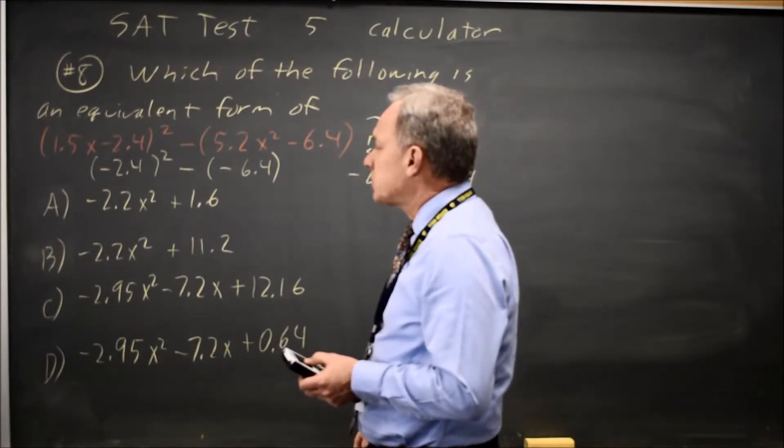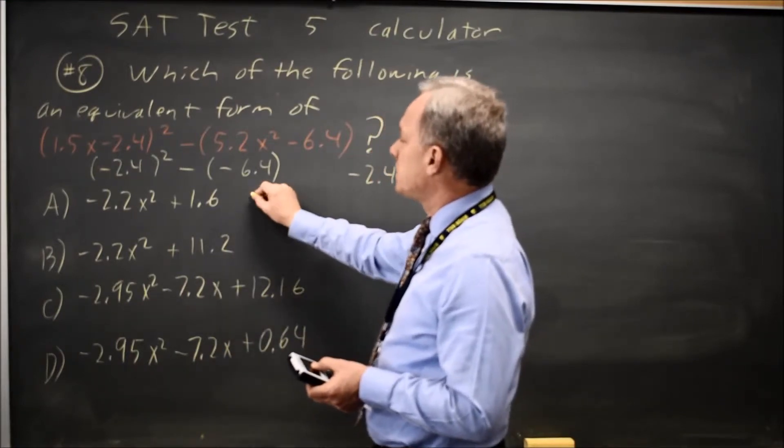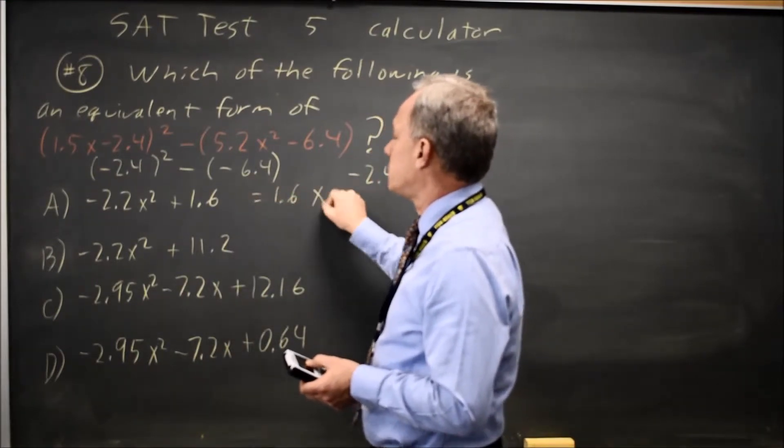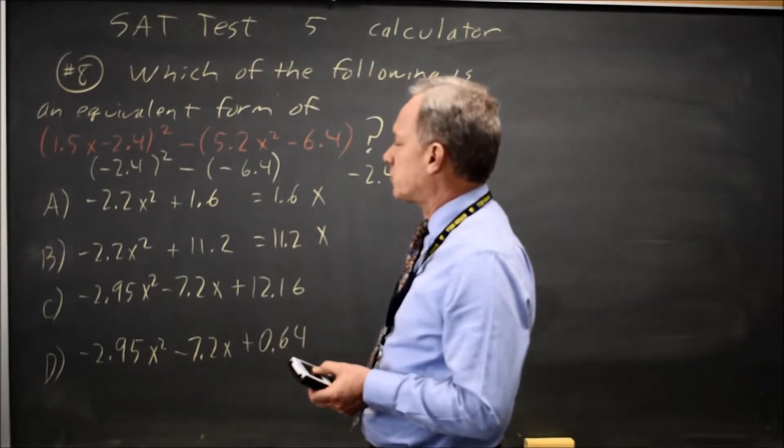At x equals 0, I should get 12.16. This is 1.6, which is wrong. This is 11.2, which is also wrong.